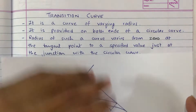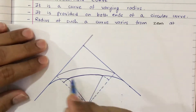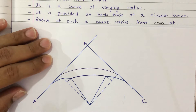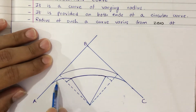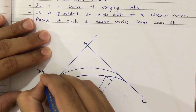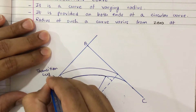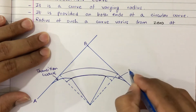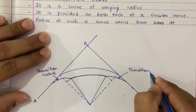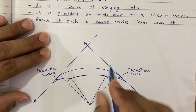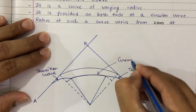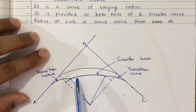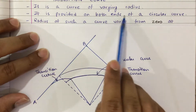This is a typical transition curve. You can see over here that these are two straights — straight AB and straight BC. In between these two straights, transition curves are provided. This is the transition curve, provided at both ends of a circular curve. One more transition curve will be here and at the centre there will be a circular curve. So it is a curve of varying radius, provided on both ends of a circular curve.